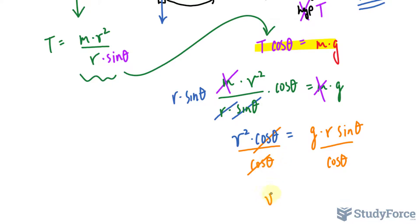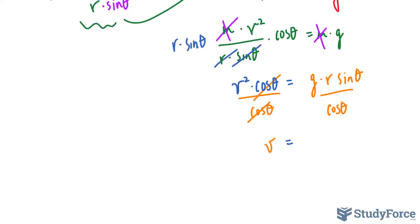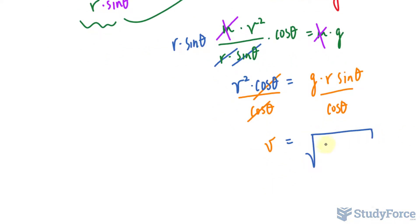And we are left with v squared, which you can get rid of the squared by square rooting both sides. So let's assume that we do that. We get the square root of g times r times sine theta over cosine theta. Now remember, sine over cosine, that's an identity for tangent, so feel free to use tangent if you like.